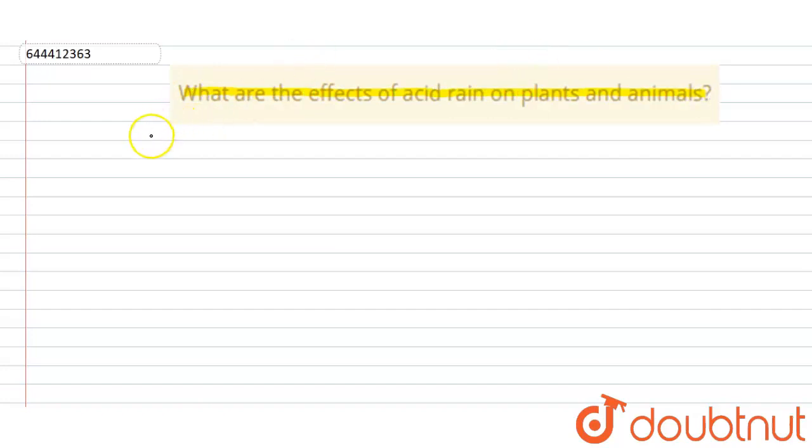Firstly, what is acid rain? As we know that normally rain has a pH of 5.6, but when this pH drops below 5.6, then rain becomes acid rain.